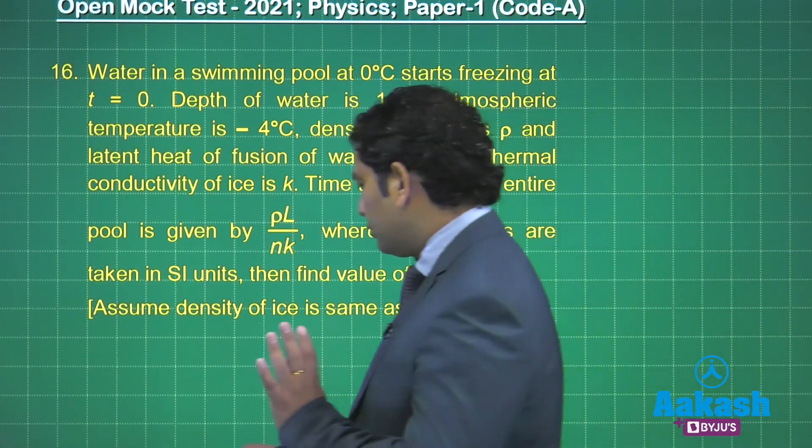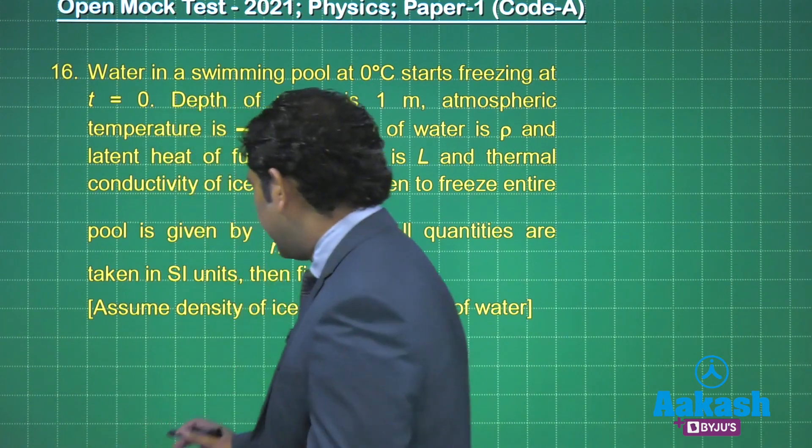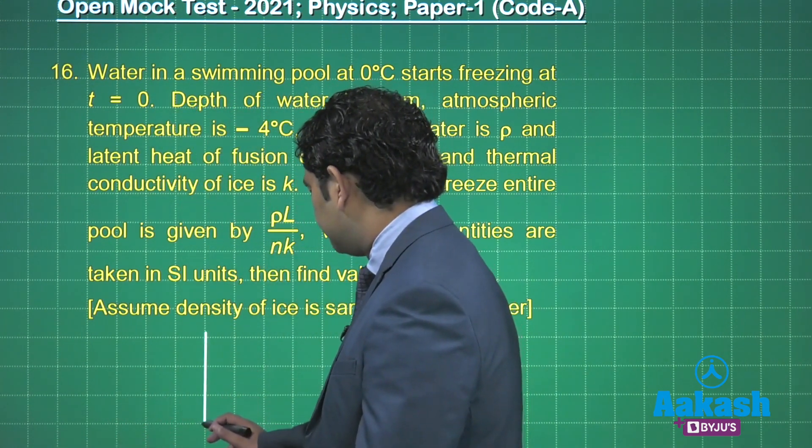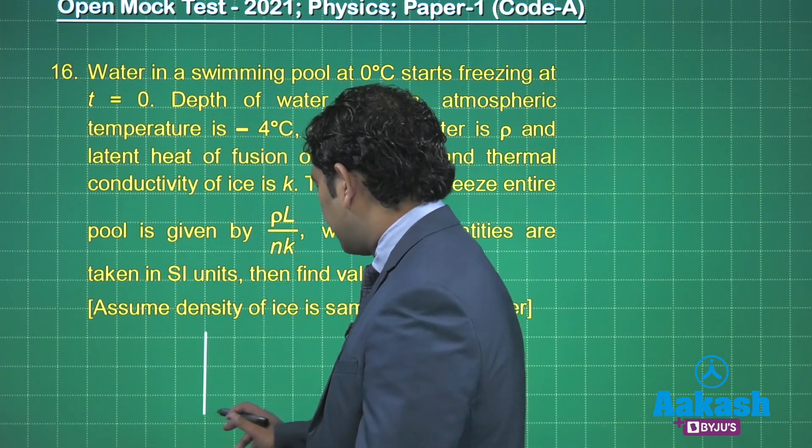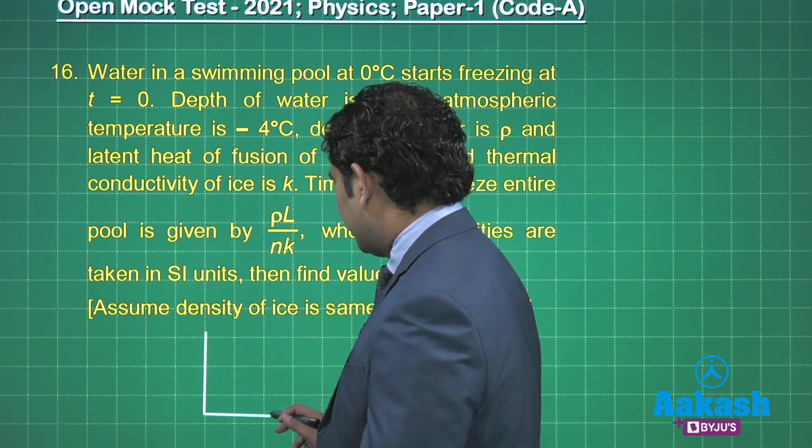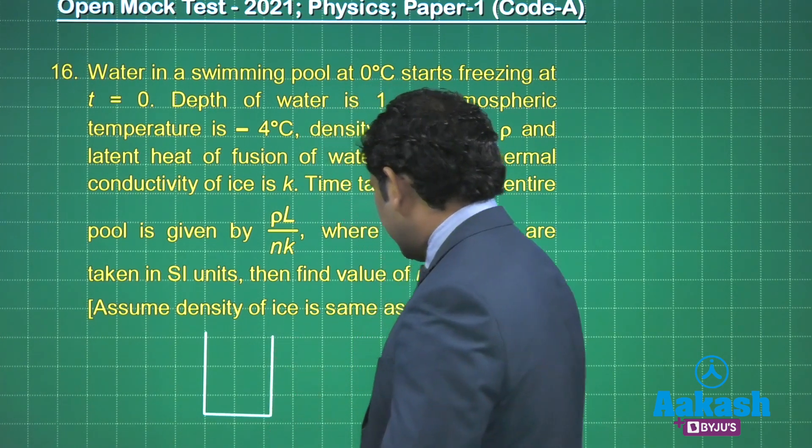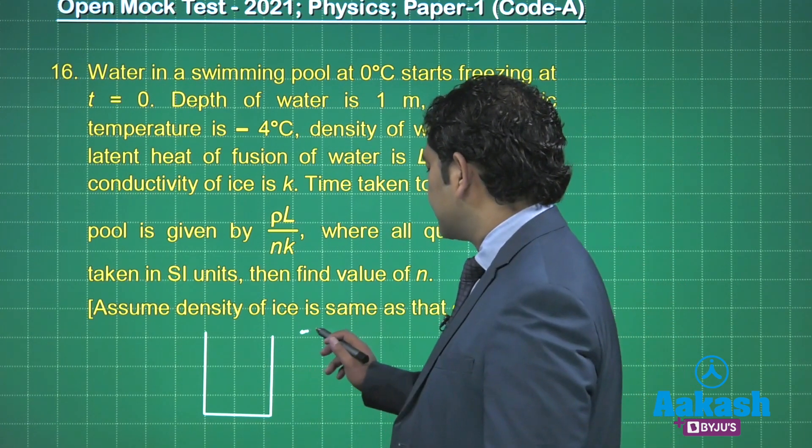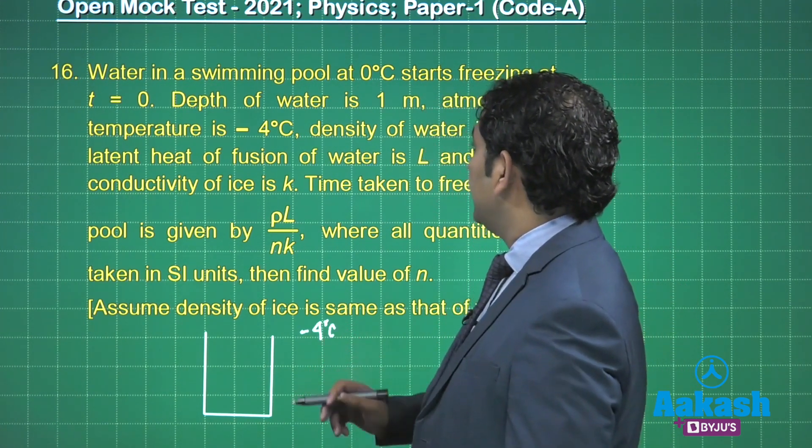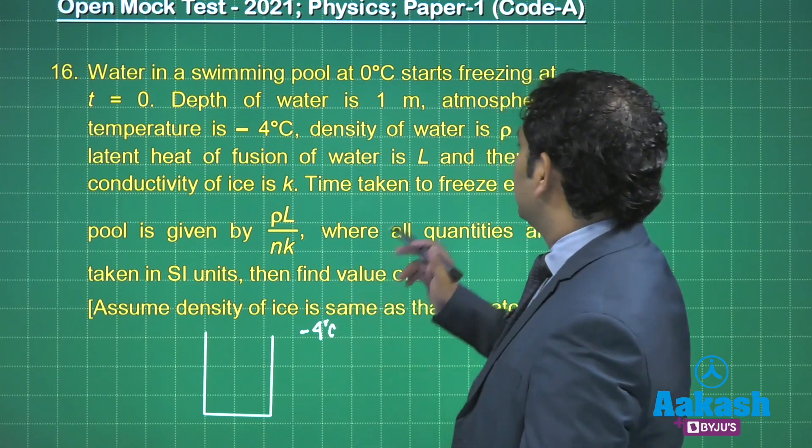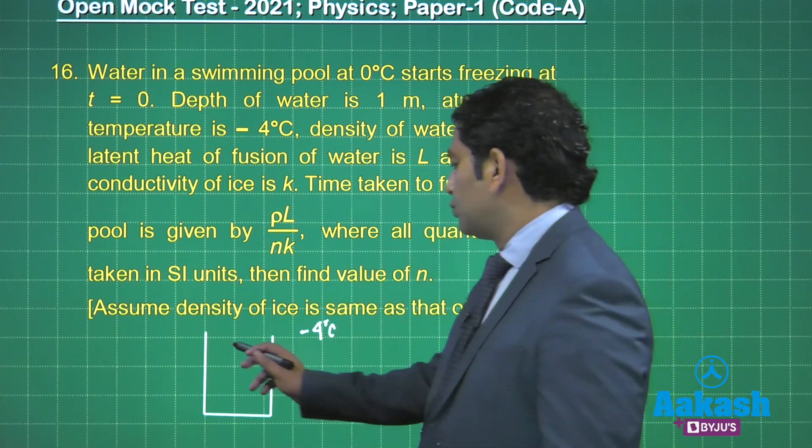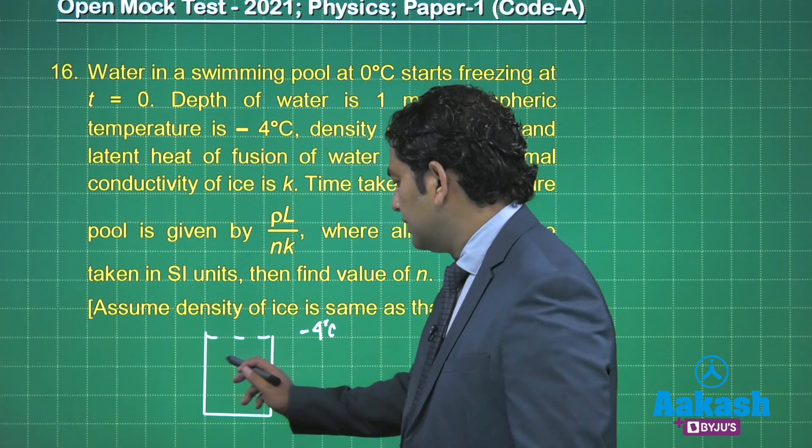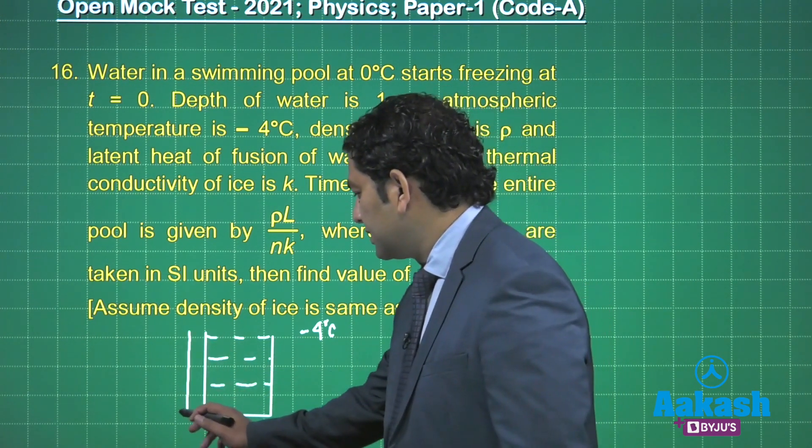Now what do I require? I require a swimming pool. Let me make the swimming pool first. Swimming pool here. The outer temperature, that is how much? Minus four degree centigrade. And depth of water, that's one meter. Okay, that's one meter.